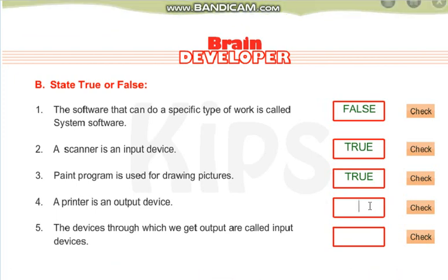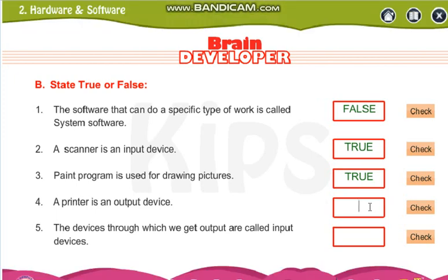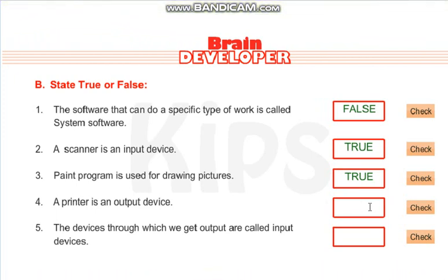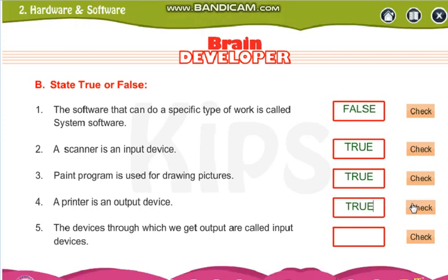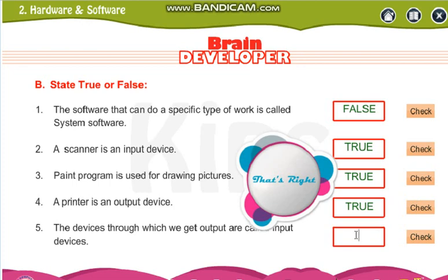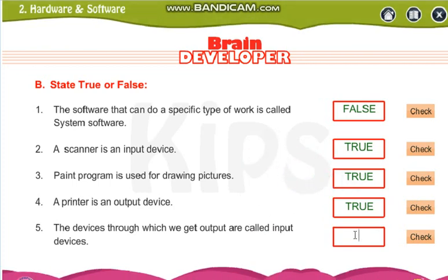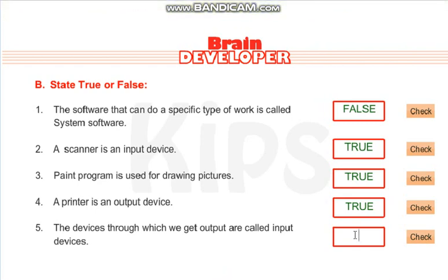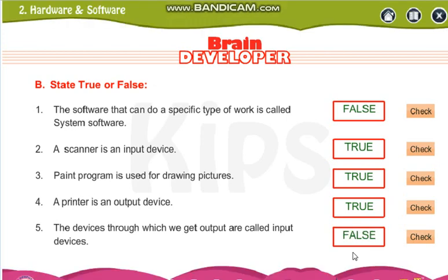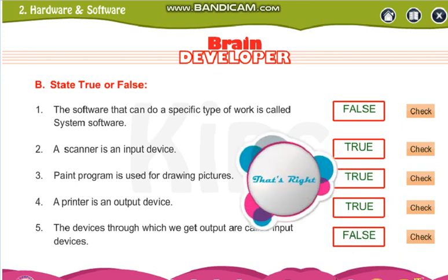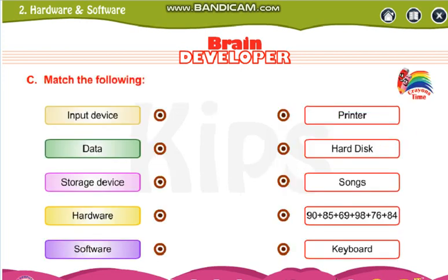A printer is an output device — yes. Printer gives output, so it's true. The devices through which we get output are called input devices. When we get output, how can we call it input devices? So it's a false statement — wrong. We have written false. Right.